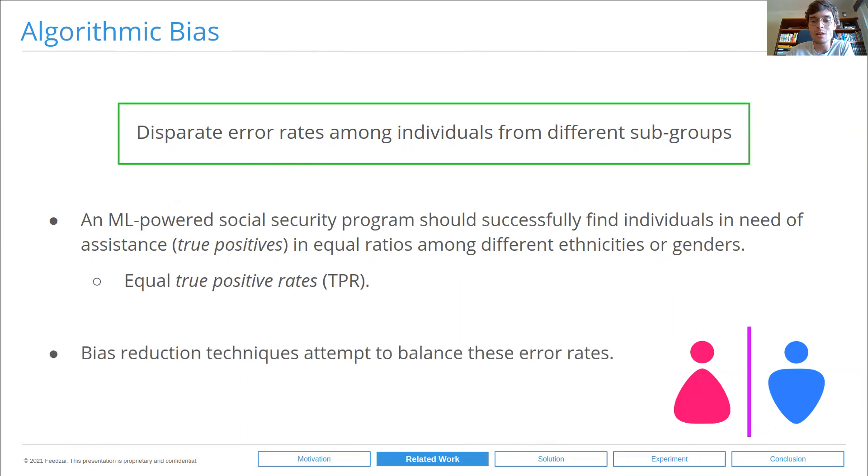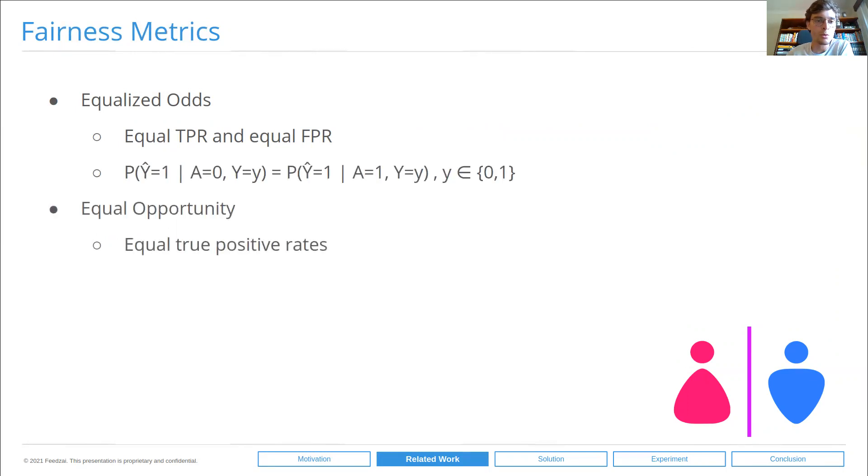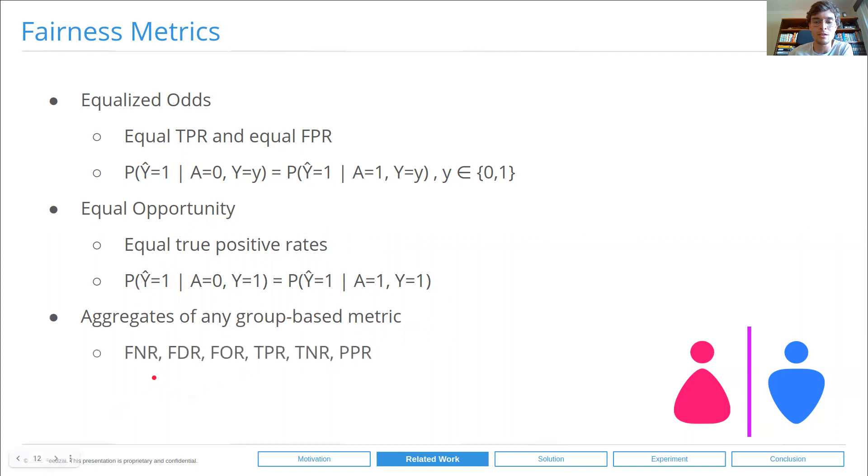Bias reduction techniques essentially attempt to balance these error rates. Regarding fairness metrics, popular notions include equalized odds, which dictates equal true positive rates and equal false positive rates. Equal opportunity is a relaxation of equalized odds that dictates only equal true positive rates, which is the metric that we saw on our hypothetical social security program. This essentially dictates that the likelihood of a positive prediction, conditioned on having a positive label and belonging to the underprivileged group, should be equal to the likelihood of a positive prediction conditioned on having a positive label and belonging to the privileged group. The likelihood of a positive prediction, given that you have a positive label, should be independent of which group you belong to. In essence, any aggregate of a group-based metric can be used to define fairness, and it is highly task dependent.